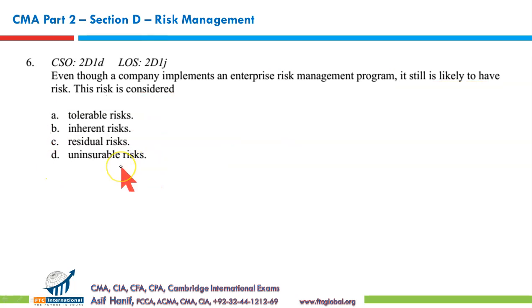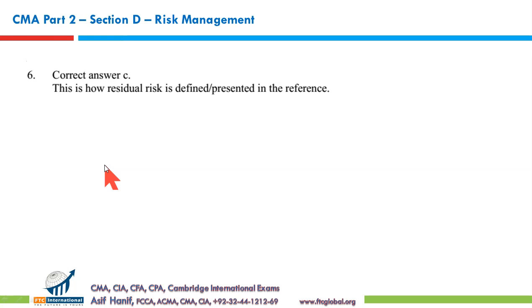Uninsurable risk is the risk that cannot be insured — for example, you cannot get insurance on CMA exam failure because it cannot be statistically determined; it is an uninsurable risk. So the result here is C: residual risk. This is how residual risk is defined and presented in the reference, and that completes the risk management section of CMA Part 2.